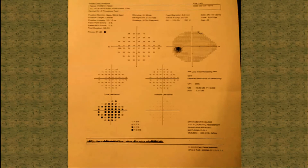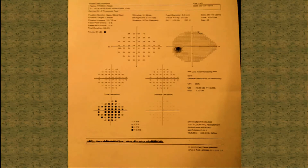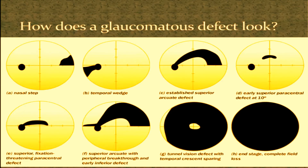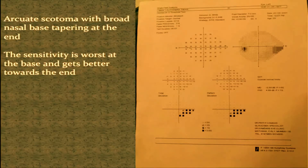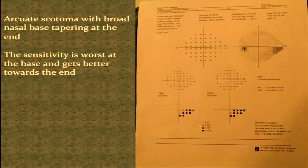Now this is again a field — is it reliable? Yes. Is it abnormal or normal? It is abnormal in the sense that total deviation shows generalized depression, but pattern deviation is normal. So there is some abnormality, but it is not glaucoma. How does a glaucomatous field look? It has various appearances, but the most common is an arcuate scotoma with a broad nasal base and tapering at the end. The sensitivity at the base is worse than at the tail. The second finding is a double arcuate scotoma.